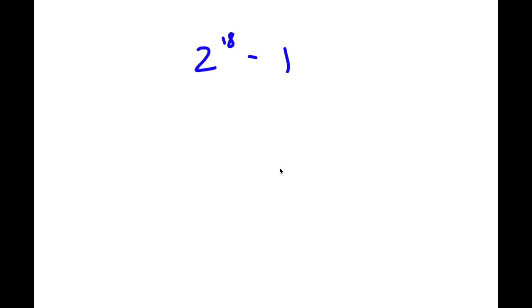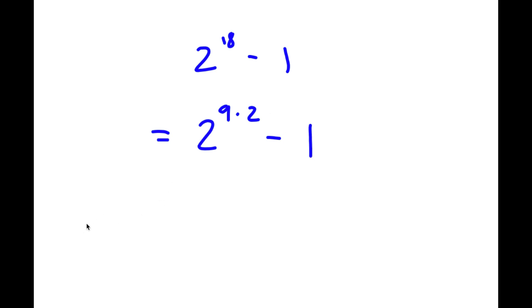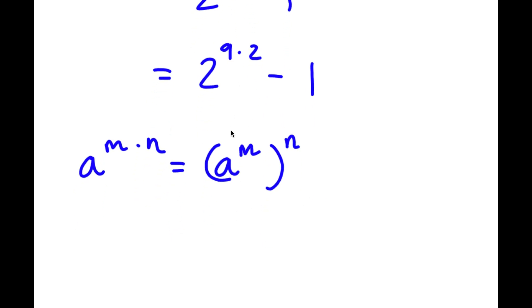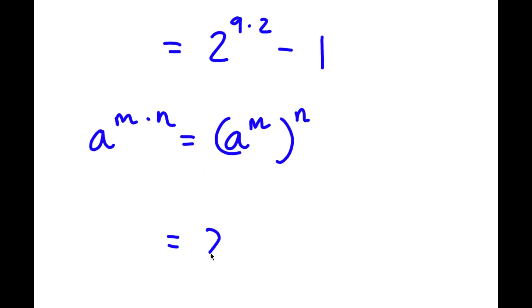In this problem, I have 2 to the power of 18 minus 1. To start, 18 is the same thing as 9 times 2, so I have 2 to the power of 9 times 2 minus 1. If I have something in the form a to the power of m times n, this equals a to the power of m to the power of n. So 2 to the power of 9 times 2 equals 2 to the power of 9 to the power of 2.